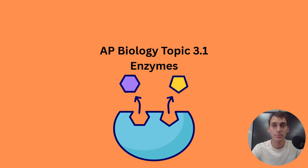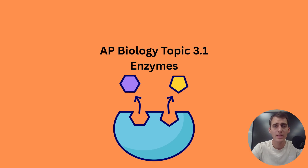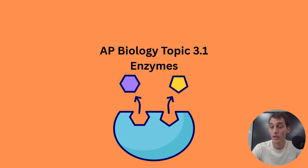Hello everybody, it's your AP Biology teacher Mr. Poser. Today we are starting our third unit in the curriculum: cellular energetics. We're going to be covering three main things — enzymes, photosynthesis, and cellular respiration. Those are the big three topics in this unit and they come up throughout the entire year. This is an important unit with substantial weight on the exam.